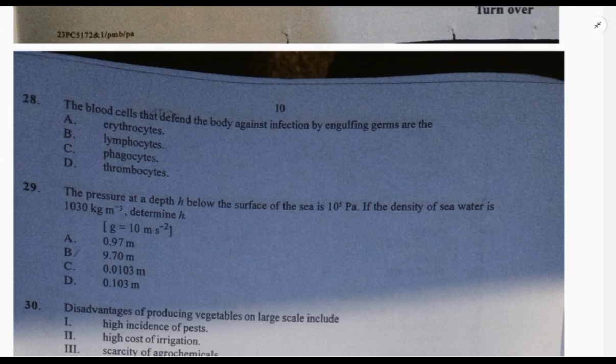From now onward, there's something I've realized about these questions: two of the answers are mostly right, and it's a way of making students think to really get the actual answer. Question 28: the blood cells that defend the body against infection by engulfing germs. Erythrocytes is out, thrombocytes is out. It has to do with lymphocytes and phagocytes. B is white blood cell, C is a type of white blood cell that engulfs, so the answer is C, phagocyte.